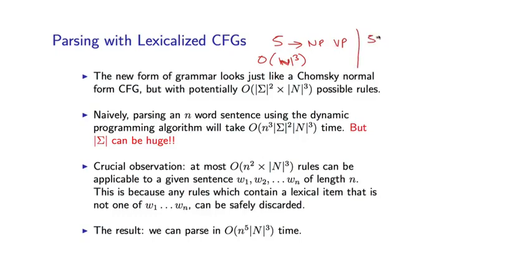In this new grammar I have things like S(saw) goes to NP(dog) VP(saw). If I think of the number of choices, I have three non-terminals here: S, NP, and VP, so I have N cubed choices there. And also in each rule I have two words, the head word 'saw' and the modifier word 'dog'. So I'm going to have sigma squared. There are many, many possible rules. I've gone from a grammar with order N cubed rules to a grammar with this many rules.